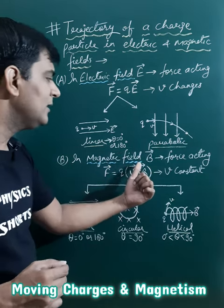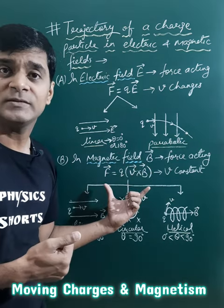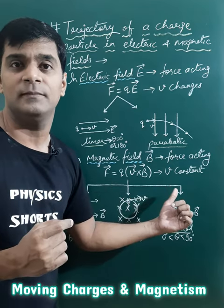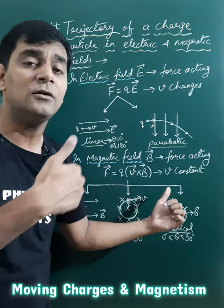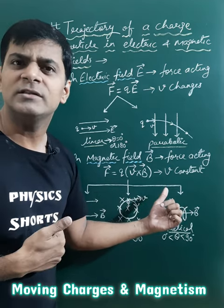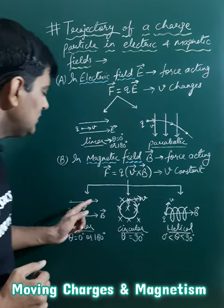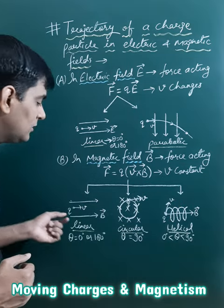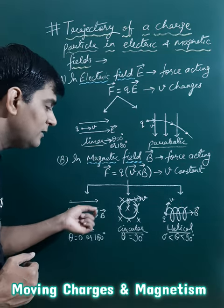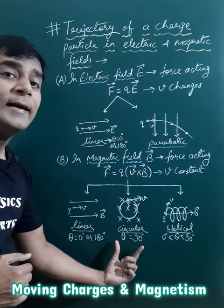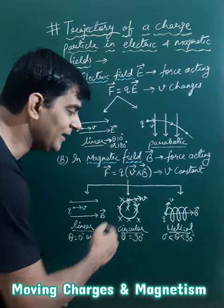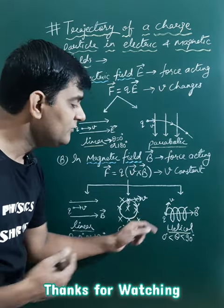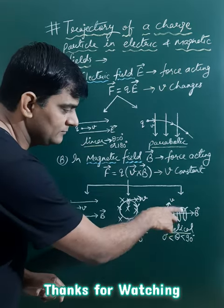In a magnetic field, the force acting is qv cross B. This force cannot change the speed of the particle — the direction of velocity may change, but speed will not. There are three cases: for theta = 0° or 180°, the path is linear; for theta = 90°, the path is circular; and for theta between 0° and 90°, the path is helical.